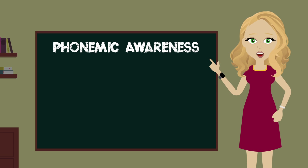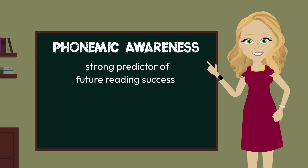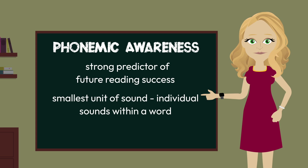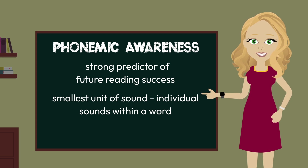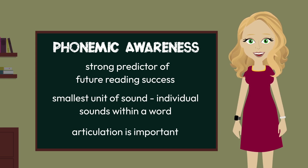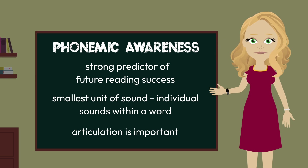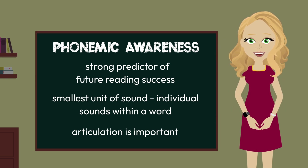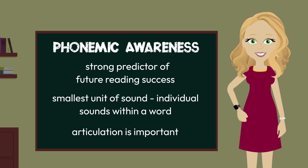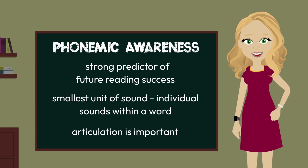Phonemic awareness is the most challenging level in the phonological awareness structure of sound study and a strong predictor of future reading success. The auditory work at this level focuses on the smallest unit of sound — the individual sounds within a word. We should always attend to the way we speak in the classroom, but at this level articulation is important, as the focus is on the individual sounds, so students must hear them clearly. We spend a little time talking about the 44 phonemes of our language and the types of sounds we work with, but we are not going to recap those here as you will get a heavy dose of that content in the following module.